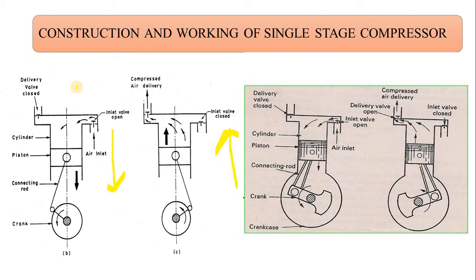In case of the single acting or single stage compressor, when the piston moves from TDC to BDC — that is from top dead center to bottom dead center — when the crank rotates, the piston moves from TDC to BDC. Fresh air from the atmosphere comes inside and air is trapped in that particular passage, and when the piston reaches the lowest position, the suction stroke is completed.